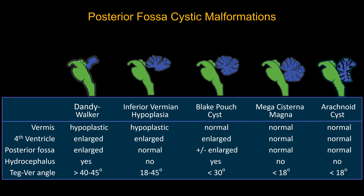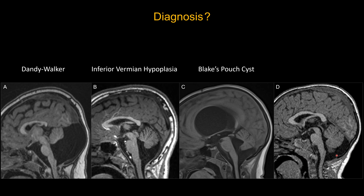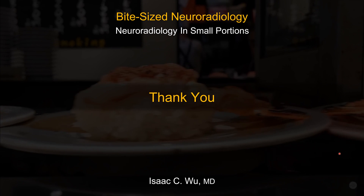By using those landmarks you should be able to identify these common posterior fossa cystic malformations. Back to those four cases: Patient A — classic Dandy Walker malformation. Patient B — inferior vermian hypoplasia. Patient C — hydrocephalus with obstruction, Blake's pouch cyst. Patient D — enlargement of subarachnoid space inferior to the vermis without other anomalies, that's mega cisterna magna, a normal anatomical variant. I hope that's helpful — thank you and have a good day.